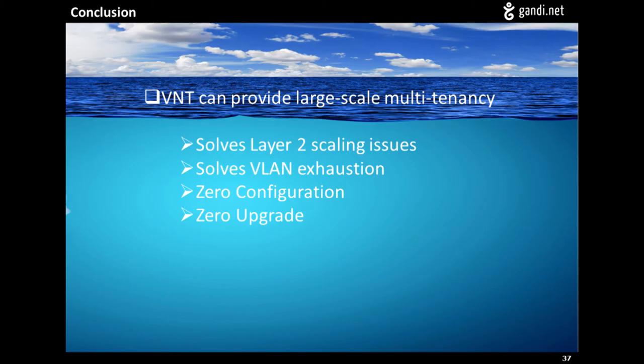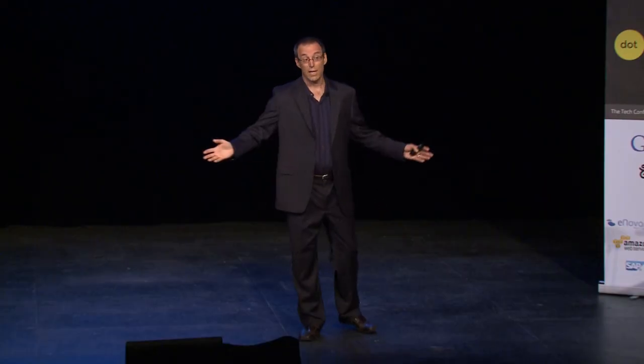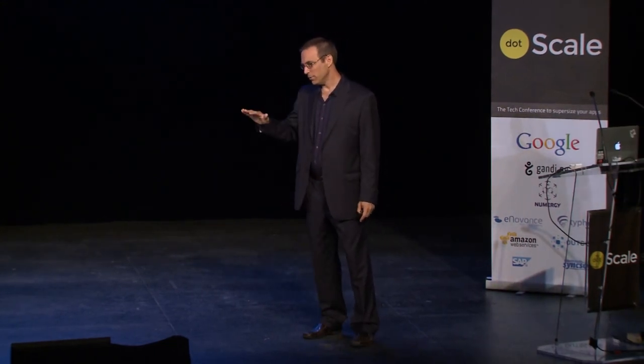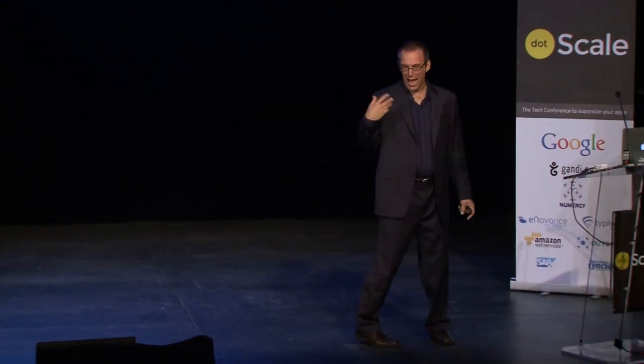So in conclusion here, VNT really can solve the problem of providing large-scale multi-tenancy with private VLANs. It solves the layer 2 scaling issues we hit. It solves the VLAN exhaustion problem, which is a big problem. It is near-zero configuration. I mean, when you deploy it in this way on the nodes, not in some other switch, you don't have to do anything to that node for it just to work—you just have to start tagging the interfaces and it will learn the topology. And there's no upgrade required to your existing infrastructure. No software-defined networking, no new switches.